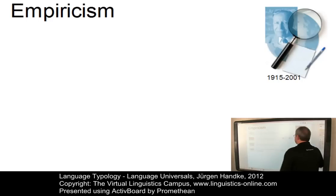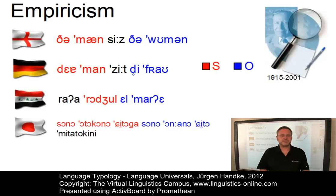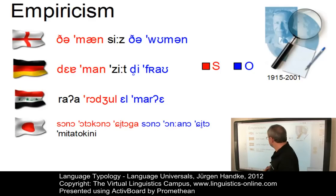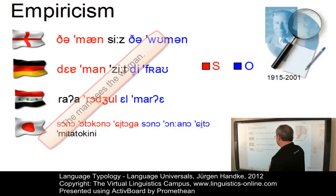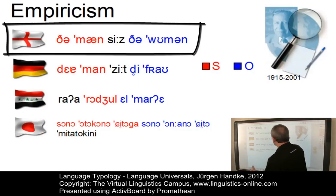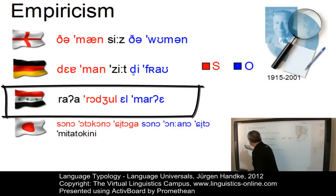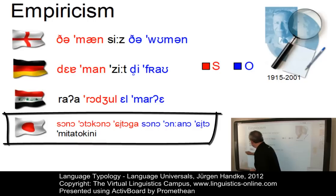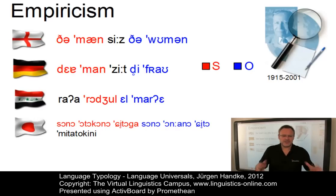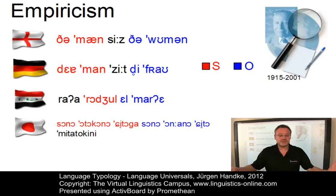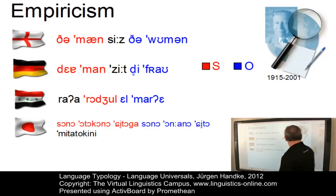Let us look at an example. In all these cases, the subject precedes the object, irrespective of the position of the verb. We have the sentence 'the man sees the woman' represented in several languages. In German: 'der Mann sieht die Frau.' In Arabic: 'rää al-rajul al-mar'a.' And in Japanese as well. In all these languages, irrespective of the position of the verb, the subject precedes the object. If the database is large enough, a general principle emerges, referred to as universal number one by Joseph Greenberg.